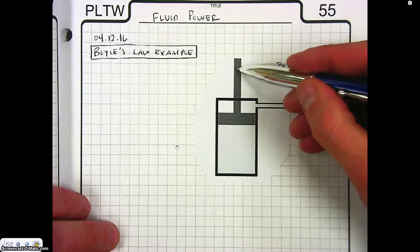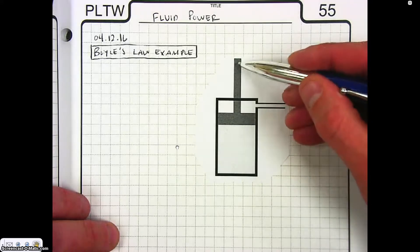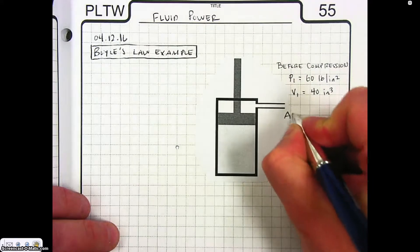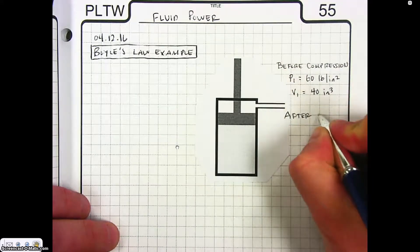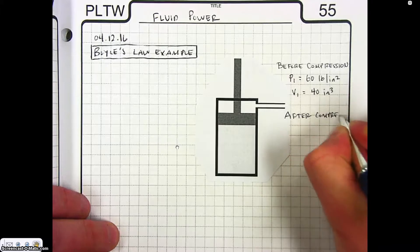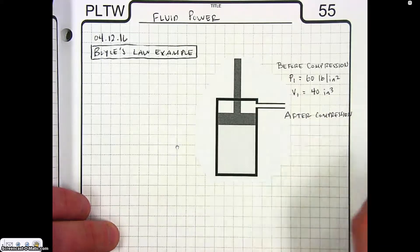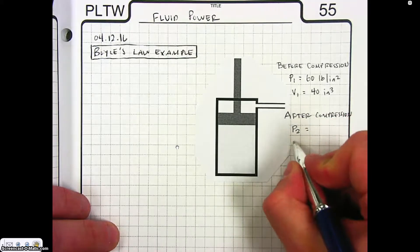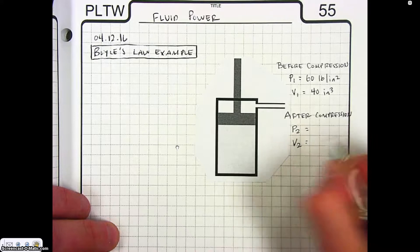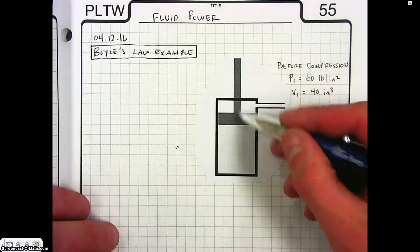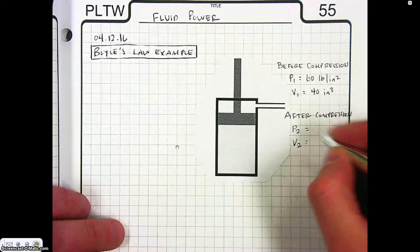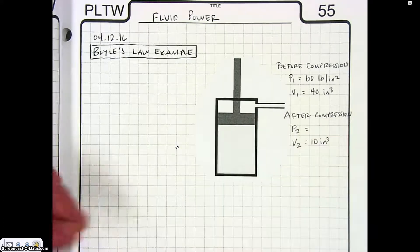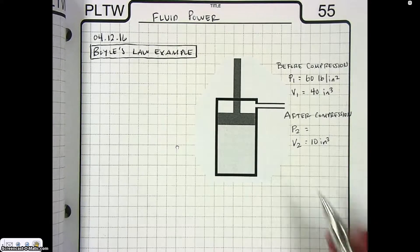What's going to happen is we are going to compress this — say we're putting as much force with maybe just our hand as we can — and after compression, what's the result? That's what we're figuring out. After compression, we have P2, that's what we're going to solve for, and we have V2. The volume after we compress it — say we push it down and read the cylinder — we're going to say that it is 10 cubic inches. So what we're going to be doing is solving for P2.